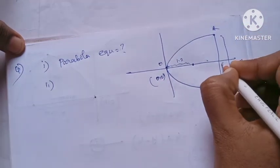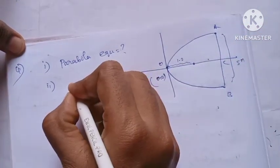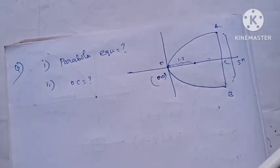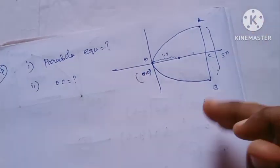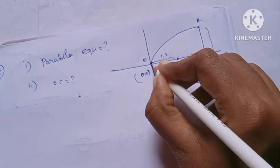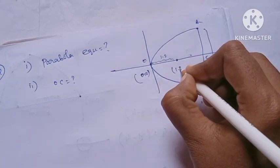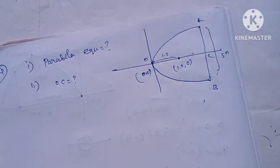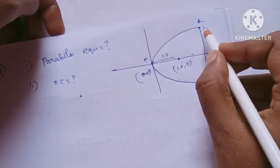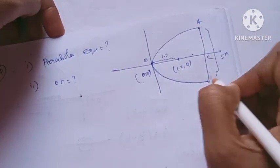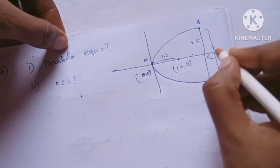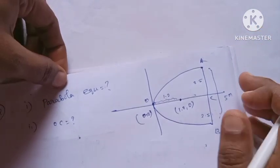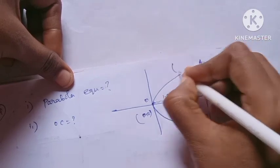Looking at the diagram, we have points A, B, and C, with O at the origin. The focus is 1.2 meters. The y-axis value at the opening is 0 on the axis, and the total width is 5 meters, so the half-width is 2.5 meters. Let's mark the point (x₁, 2.5) on the parabola.